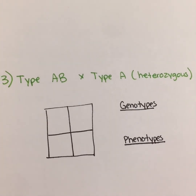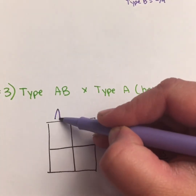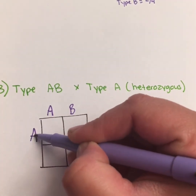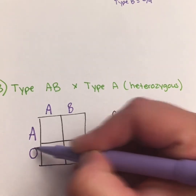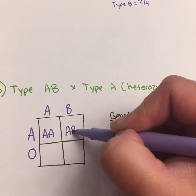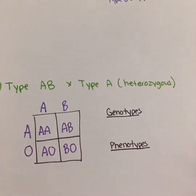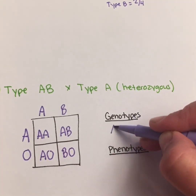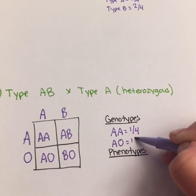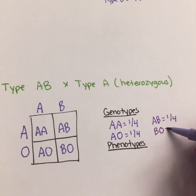Let's try one more example together. We cross a person with type AB blood with a person who has type A blood but is heterozygous for that. Here is type AB blood. Heterozygous means two different — they have type A, so we know they have an A allele, and since they are heterozygous, the other allele will be O, because A is dominant to O. So the boxes give us AA, AB, AO, and BO — four different genotypes, each one out of four.